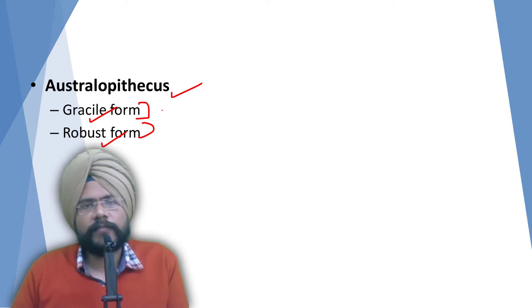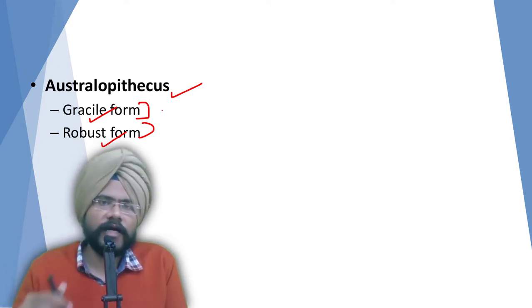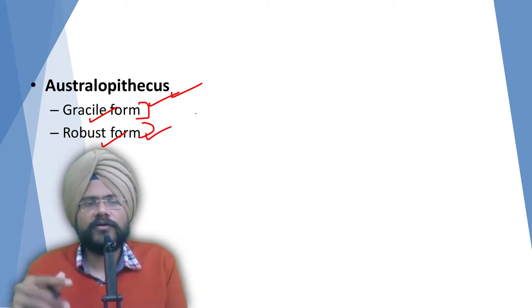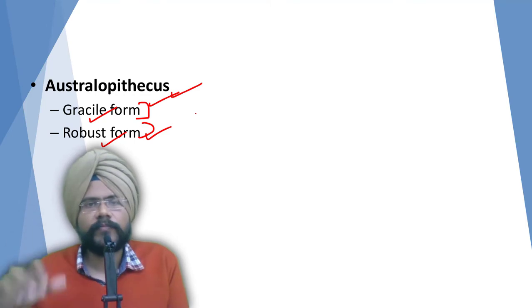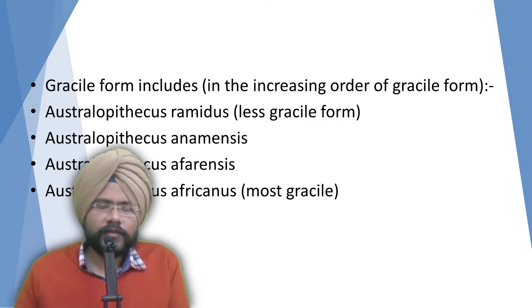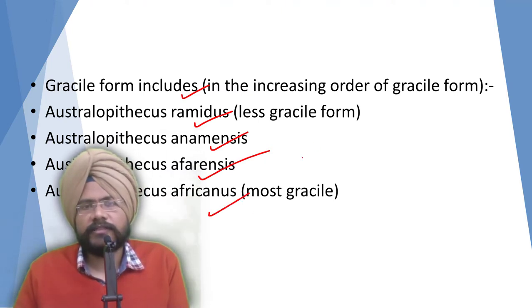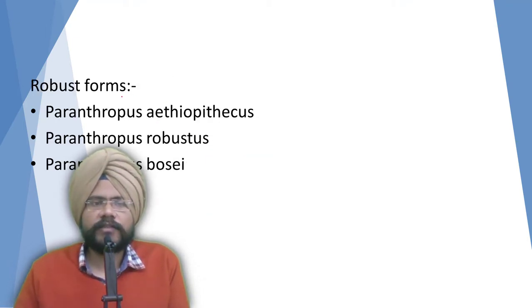Based on cranial capacity and skull anatomy, there are two forms: the gracile form and the robust form. The gracile form includes Anamensis, Afarensis, and Africanus — from least gracile to most gracile. The robustus forms include Aethiopithecus, Robustus, Boisei, and Afarensis-Boisei.